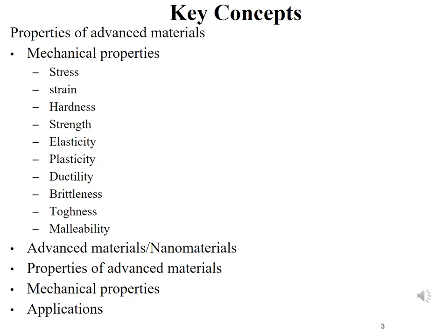In the previous lecture we discussed properties of advanced materials. Our main topic is mechanical properties, and in these properties we discussed stress, strain, hardness, strength, elasticity, plasticity, ductility, brittleness, toughness, and malleability. We also discussed what are advanced materials and what are nanomaterials. Today we will start from the characteristics of nanomaterials.